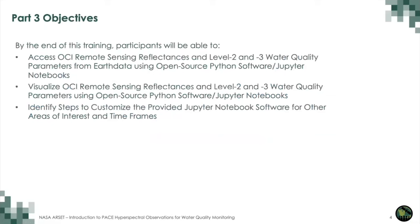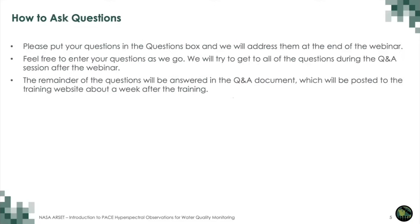Today's objectives: by the end of this training you should be able to access OCI remote sensing reflectances and level two and three water quality parameters from EarthData using open-source Python software and Jupyter Notebooks. You should also be able to visualize those data and identify steps to customize the provided Jupyter Notebook for other areas of interest and time frames. Questions can be placed in the questions box and will be addressed at the end of the webinar; remaining questions will be posted in a Q&A document on the training website about a week after the training.